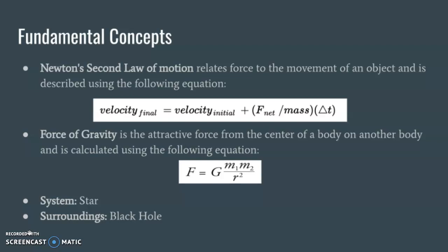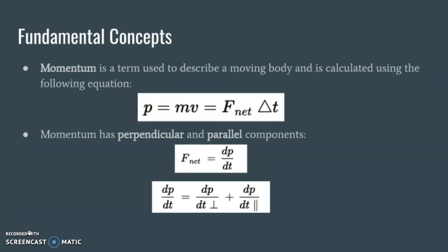In order to properly complete this lab, I needed to assign the surroundings and system. In the computer model, the star is the system and the black hole is the surroundings. Finally, momentum is observed in the lab. Momentum describes the movement of a body and is calculated using p equals mass times velocity, which also equals net force times delta t. There are two important pieces of momentum: the parallel and perpendicular forces. The parallel forces are used to describe the changes in speed of an object, and the perpendicular forces are used to describe the changes in direction. When added together, the overall change in momentum is determined.